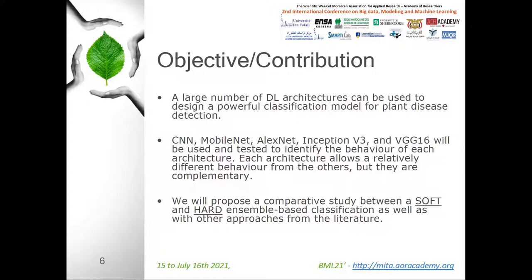Objective and contribution. A large number of deep learning architectures can be used to design a powerful classification model for plant disease detection. CNN, MobileNet, AlexNet, Inception V3, and VGG16 will be used and tested to identify the behavior of each architecture. Each architecture allows relatively different behavior from the others, but they are complementary. It has been noted that some architectures fail to correctly classify some plants while other architectures are able to classify correctly. Based on this observation, we propose a classification approach based on ensemble learning that combines the power of the five architectures, and we will conduct a comparative study between soft and hard ensemble-based classification as well as with other approaches from the literature.